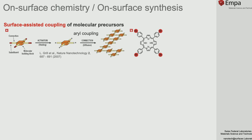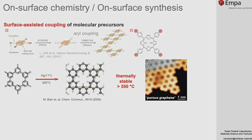Yes. In our laboratory, Roman Fasel and Pascal Ruffieux followed the initial work of Leonard Grille for the surface-assisted coupling of molecular precursors. Our first computational and theoretical studies investigated the aryl-aryl coupling of a class of molecules—in this case, the formation of a 2D network of graphene with regular holes. With this study, we demonstrated that everything in the coupling of these molecules is driven by Ullmann coupling on noble metal substrates.